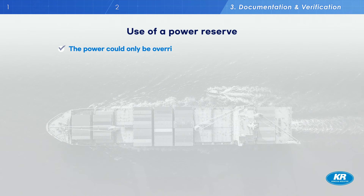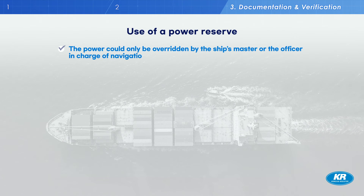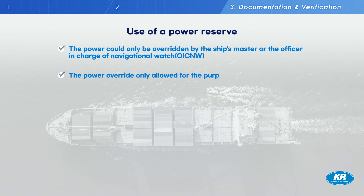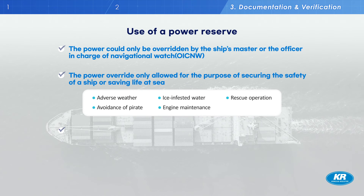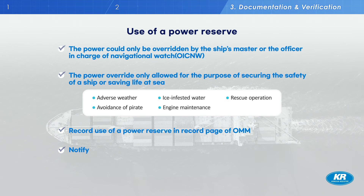Regarding temporary unlimited power, also known as the use of reserved power: only the master or the officer on duty can make the decision to temporarily release the power limit. Use of reserved power is usually only required for adverse weather, ice-infested waters, rescue operations, avoiding pirate attacks, engine maintenance, and similar situations. When the power limit is released, the details must be recorded in the OMM record page and notified to the administration or RO.